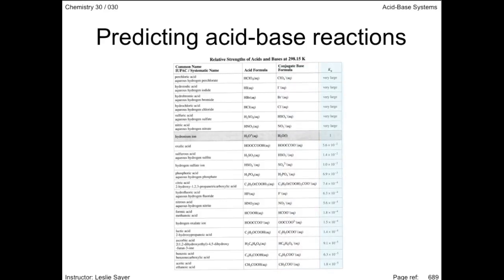The last column is the acid ionization constant, the Ka. Like the equilibrium constant, a very large Ka favors the products quantitatively. A very small Ka favors the reactants. As you can see, above the hydronium ion, the acids ionize quantitatively. Below the hydronium ion, the reactants are favored.